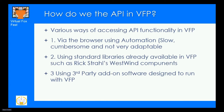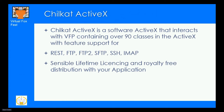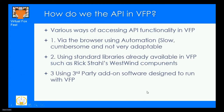How do we access REST APIs in VFP? We've talked about ChillCat. You've seen VFP using ChillCat. Option one is via the browser — you could put the web address into an embedded browser and pull data back, but that's not the fastest way. You can use standard libraries already available in VFP from Rick, or third-party add-on software designed to run with VFP, and ChillCat was the best piece of software for me.